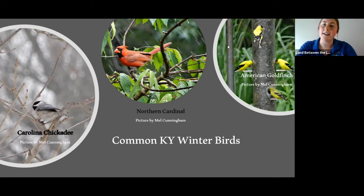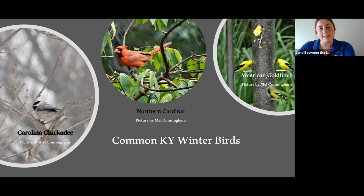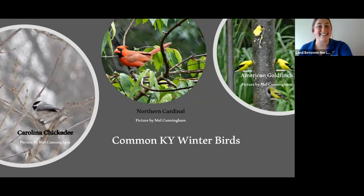The American goldfinch is all the way over here. I'd like to note this is their summer plumage — very bright, cheery yellow with dark pitch-black wings and bright white stripes. Very easy to identify in the summer. In winter, their plumage changes a little bit — they take on a more muted color, still quite a bit of yellow around their face but definitely a dimmer yellow. I have a picture later of American goldfinches in their winter plumage so you can see what they actually look like this time of year.